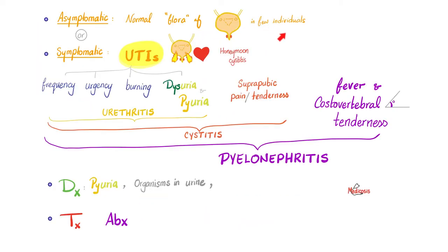If I have a urinary tract infection, I could have no symptoms or symptoms depending on how bad the UTI is and which organ is affected. If I just have urethritis, I might have frequency, urgency, burning, dysuria, and pyuria. If it's in the bladder — cystitis — I'll have these symptoms plus suprapubic pain or tenderness. If I have pyelonephritis, meaning extension to the renal pelvis, I'll have all of these plus fever and costovertebral angle tenderness.